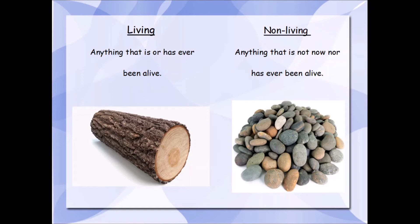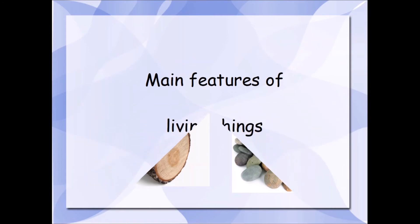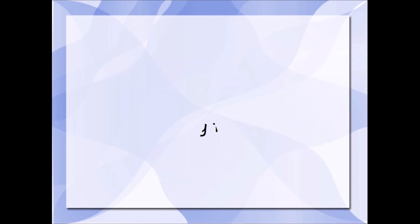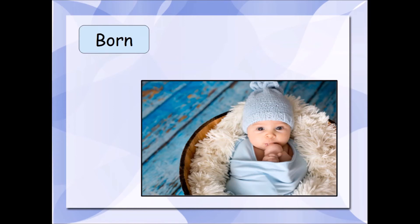Easy-peasy. Now let's go a little bit deeper. What are the main features of living things? How can we be sure that something is alive or has ever been alive? Well, let's go. The first one is that living things are born. We are born. They didn't appear. They are born. Like us, humans — we are born. Little babies, so cute.